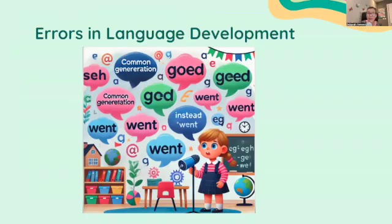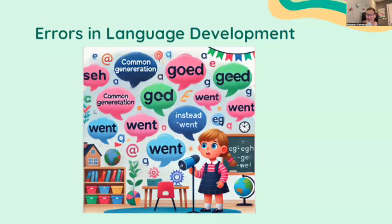The last thing we're going to look at is errors in language development — specifically overgeneralization. That's when children apply a language rule that's too broad. For example, a child might say 'I go'd to the park' instead of 'I went to the park,' overgeneralizing the past tense rule by adding '-ed' to all verbs. These errors reflect that children are actively learning and applying the rules of language, and as they're exposed to more language, they gradually correct these errors and develop a more sophisticated understanding of grammar and syntax.